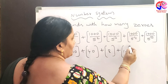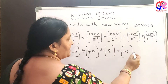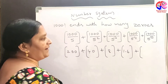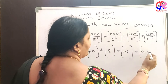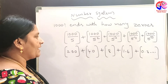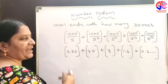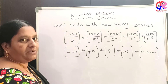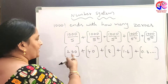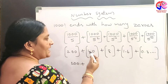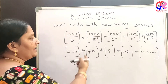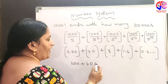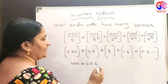Now let us evaluate each integral part. The integral part of any integer is equal to that integer itself. So the integral part of 200 is 200, the integral part of 40 is 40, and the integral part of 8 is 8.